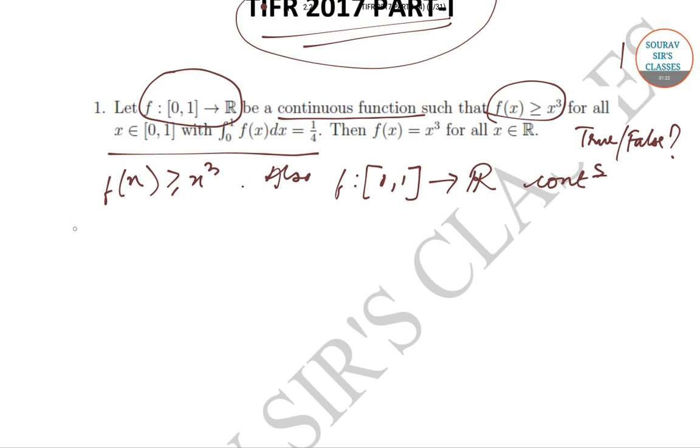So we can write that ∫₀¹ f(x)dx ≥ ∫₀¹ x³dx. And we know that the value of ∫₀¹ x³dx is equal to 1/4.